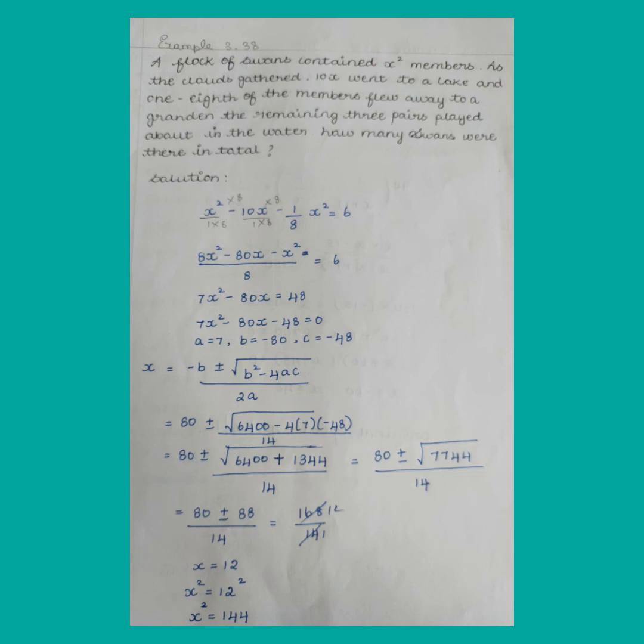x squared minus x squared z squared minus x, divided. x plus 48, now go minus 48. Upon your quadratic equation: a equals 7, b equals minus 80, c equals minus 48.